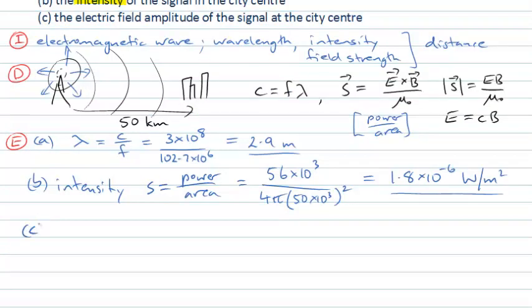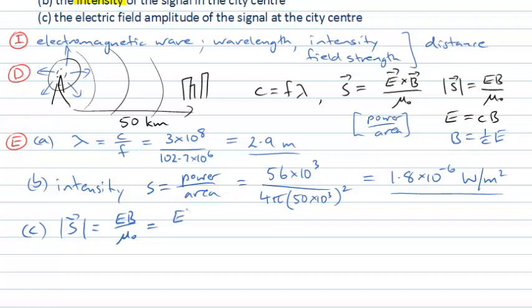Now let's look at the third part: the electric field amplitude. We already know the intensity at the city centre, so we can relate that back to the electric field. The amplitude of the Poynting vector is EB/μ₀, and since B = E/c, we can write B as (1/c)×E. This gives us E²/(μ₀c) for the amplitude of the Poynting vector.